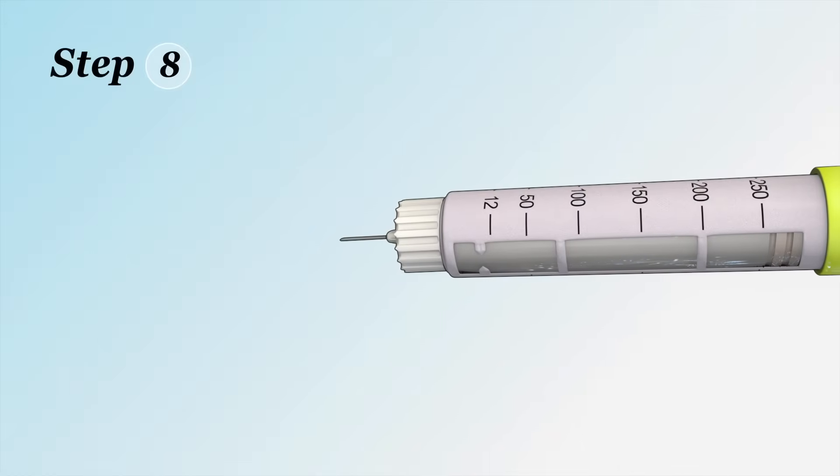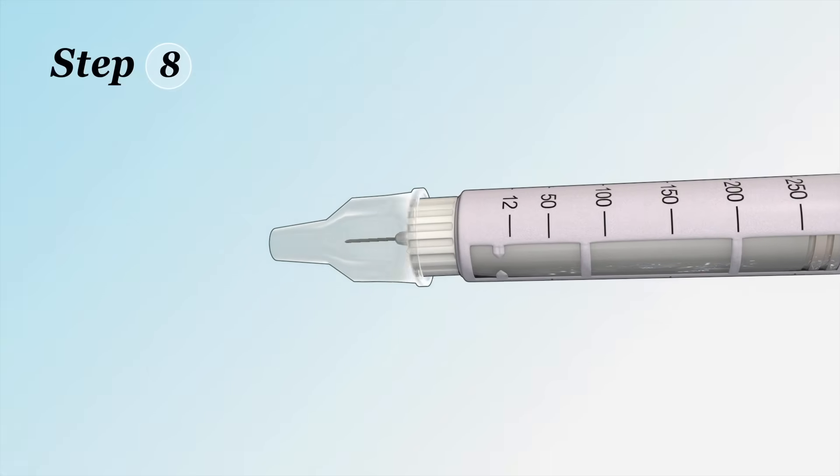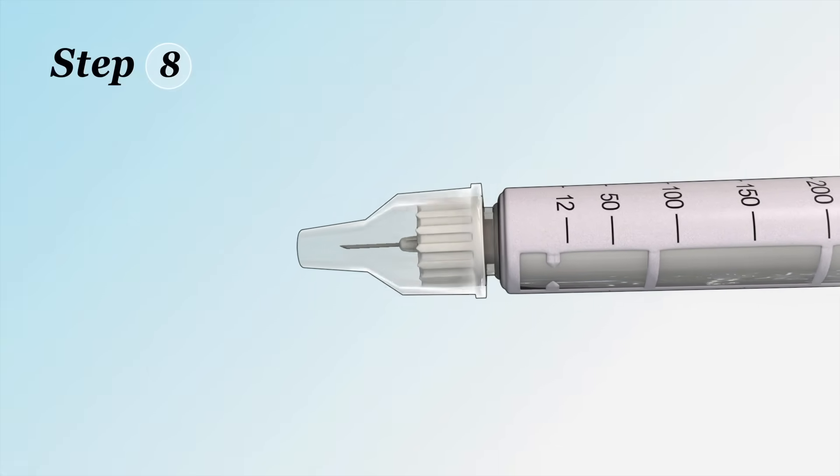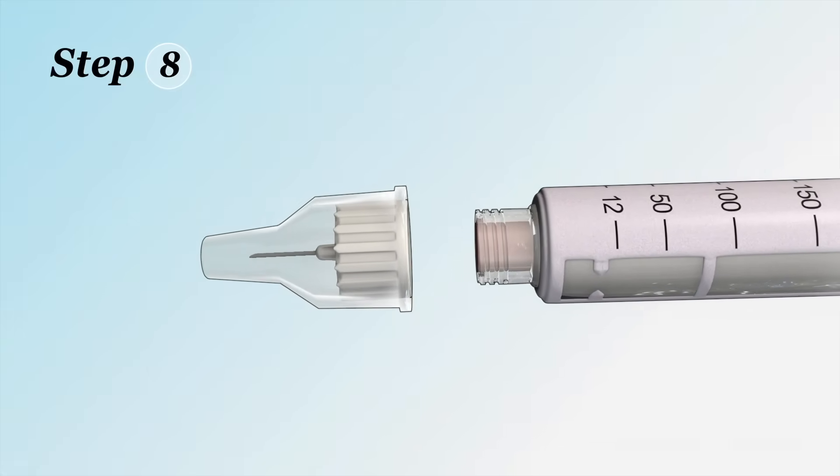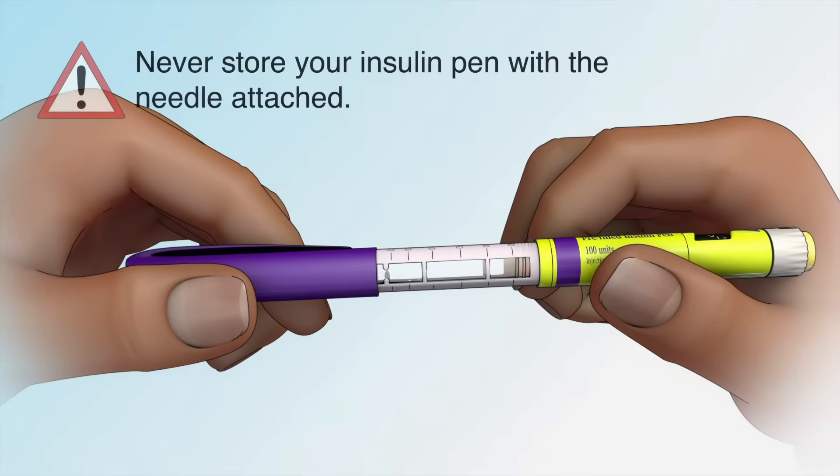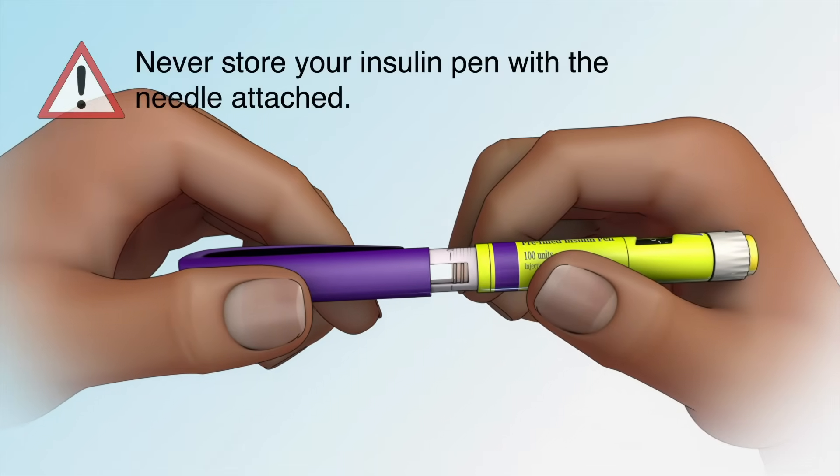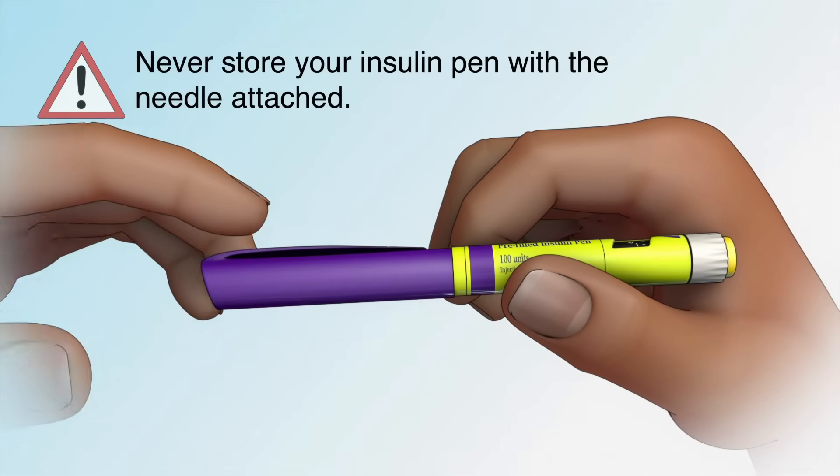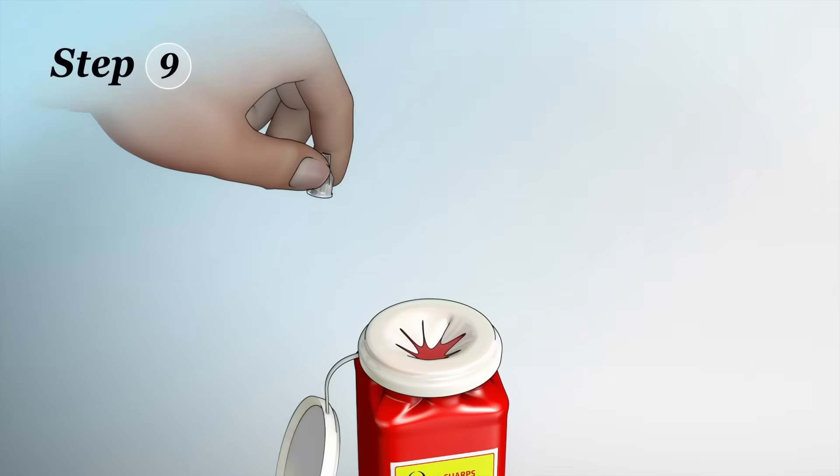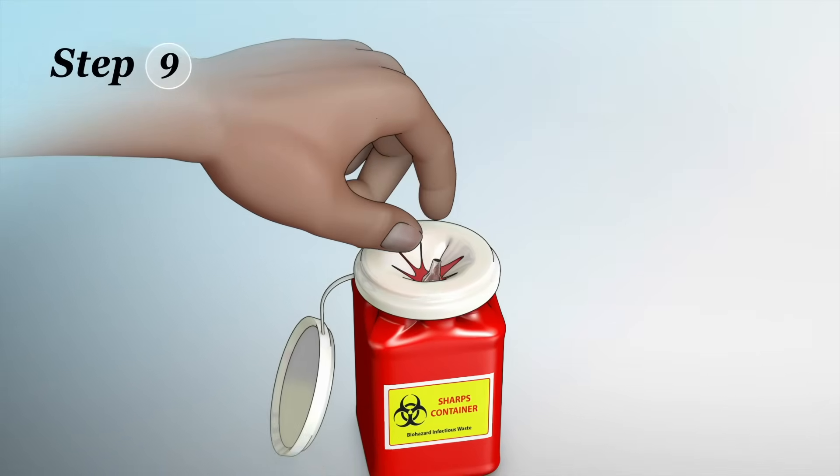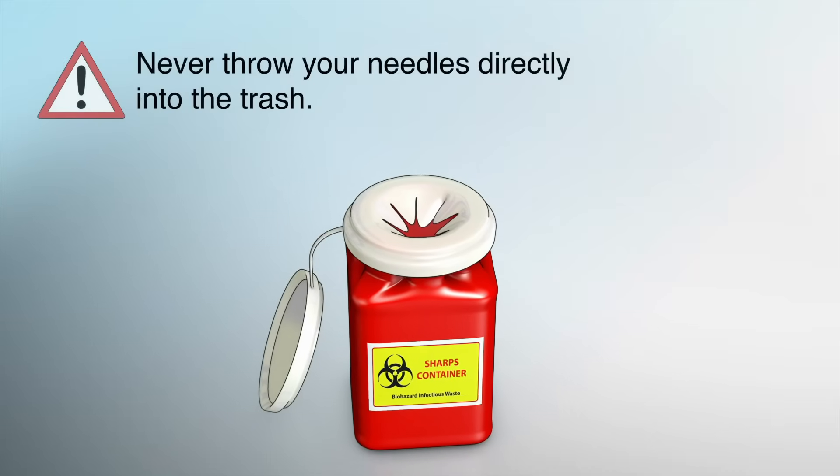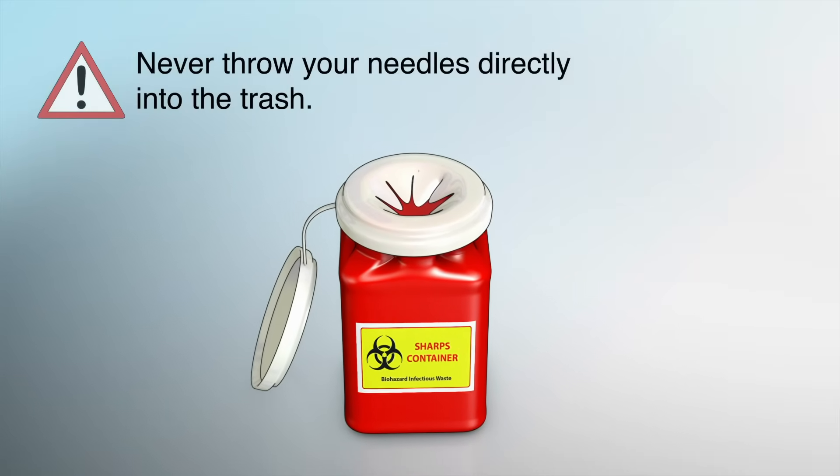Step 8: Carefully put the outer cap back onto the needle and then turn the capped needle to remove it from the pen. Make sure you remove the needle after each injection. Never store your insulin pen with the needle attached. Step 9: Throw away the needle into your sharps disposal container. Never throw your needles directly into the trash.